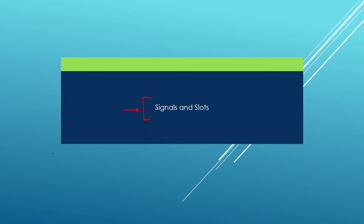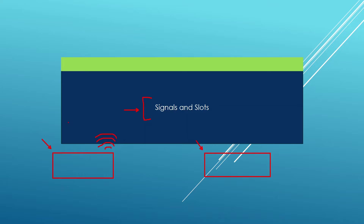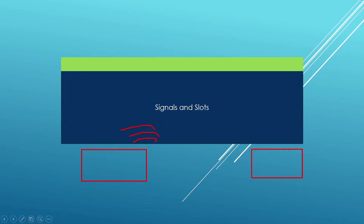In other words, when something happens, we want to respond in some other part of our code. Suppose on the left we have a push button and we want to do something when that button is clicked. We set up a piece of code that is going to respond. When the button is clicked, Qt is going to emit a signal, which is going to be picked up by whoever might be interested. The mechanism Qt provides allows us to connect signals to slots.